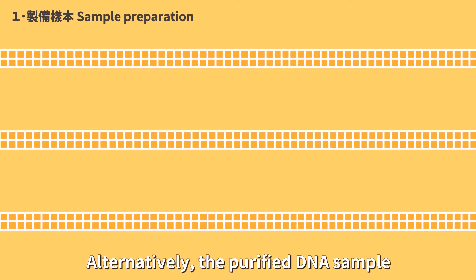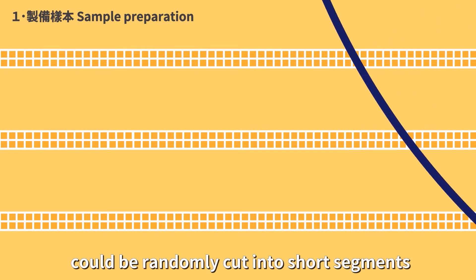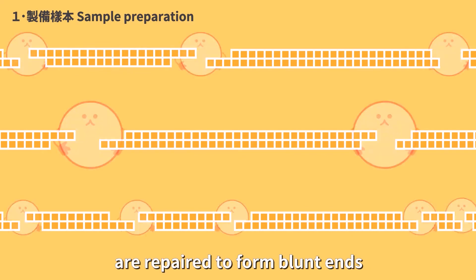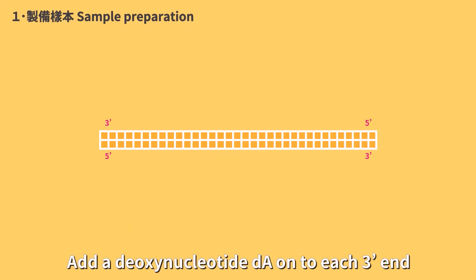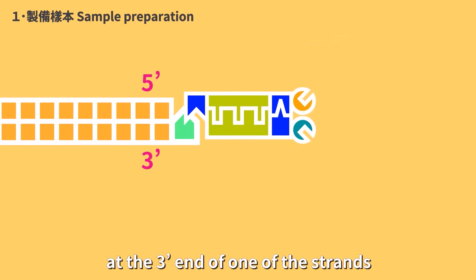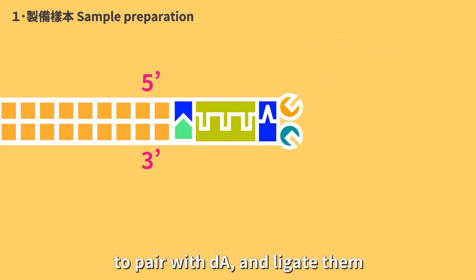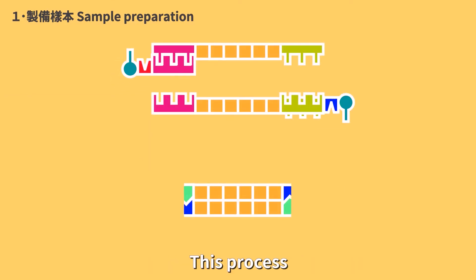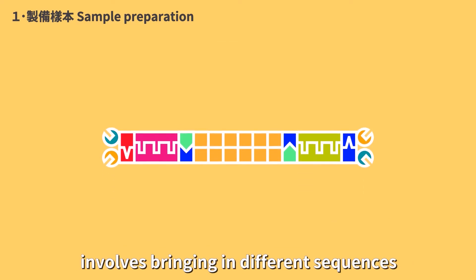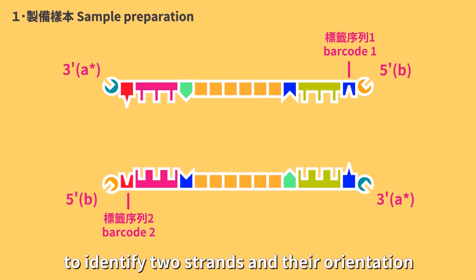Alternatively, the purified DNA sample could be randomly cut into short segments by ultrasonic waves. Both ends are repaired to form blunt ends. Add a deoxynucleotide DA onto each 3' end. Use the specially tagged segment with an overhanging deoxynucleotide DT at the 3' end of one strand to pair with DA and ligate them. This tagmentation reaction involves bringing in different sequences at both ends to identify two strands in their orientation,